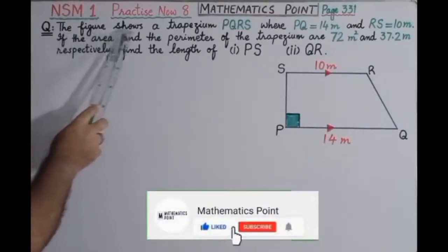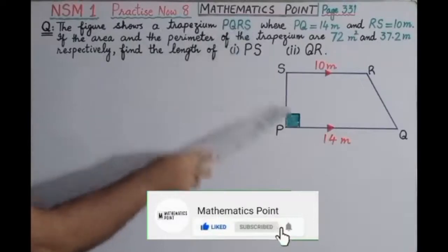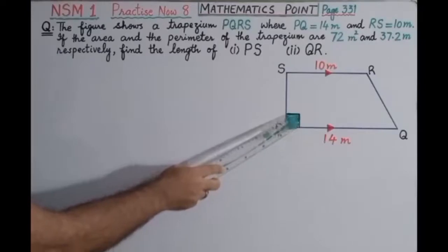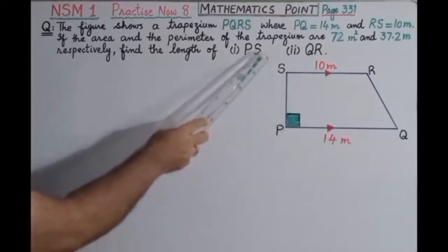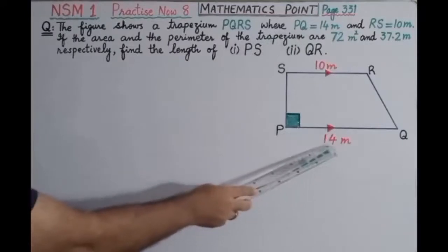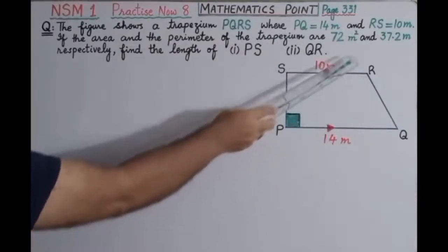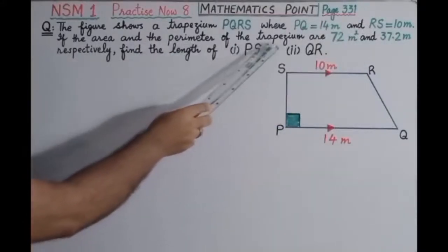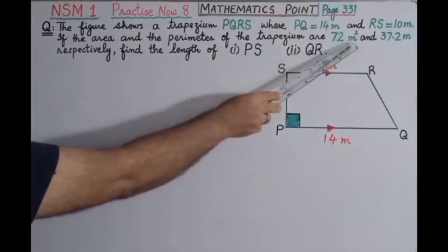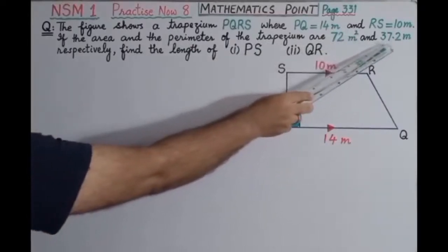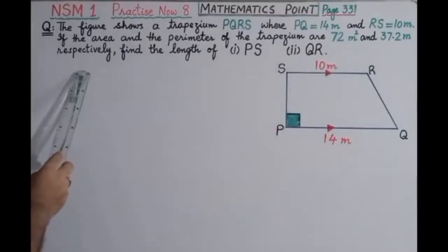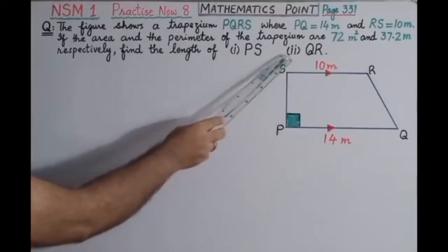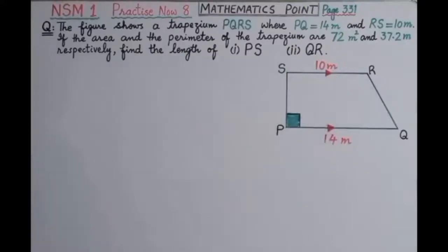The question shows a trapezium PQRS. Looking at the figure, this trapezium is named PQRS where PQ is equal to 14 meters, RS is equal to 10 meters, and the area and the perimeter of the trapezium are 72 square meters and 37.2 meters respectively.